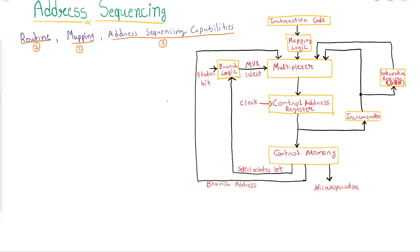Let us start with a simple understanding. The first terminology to discuss is 'routine.' Whenever any instruction is executed, for each instruction there will be a routine inside the microprogram control unit — or we can say inside the control memory. Let us understand what is the meaning of this routine.